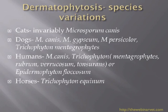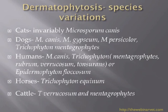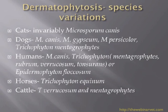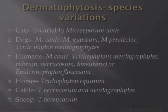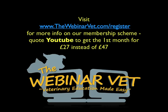Very briefly, because I don't have huge amounts of experience in this area: horses tend to get Trichophyton, cattle get Trichophyton verrucosum and mentagrophytes, and sheep also get Trichophyton verrucosum.